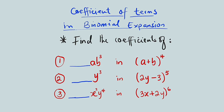Hello, good morning viewers. In our previous lesson you have seen how to find the end term of binomial expansions using the general formula, but in this tutorial we are going to look at how to find their respective coefficients using the same general formula. We have three problems in this tutorial.